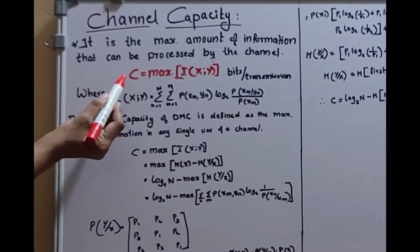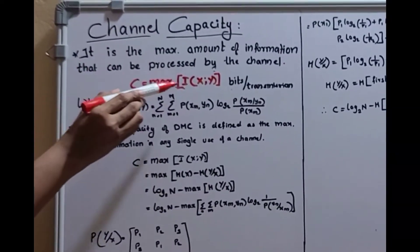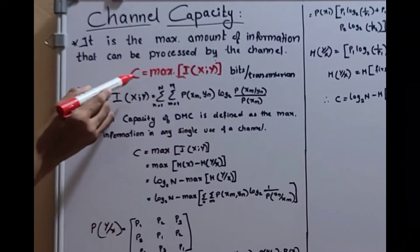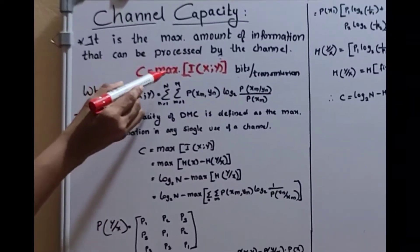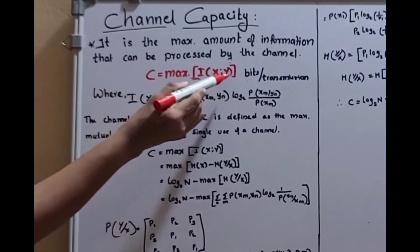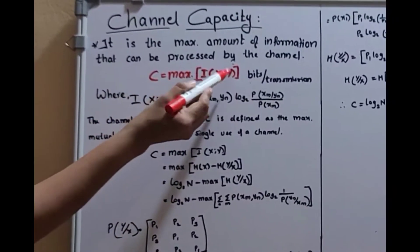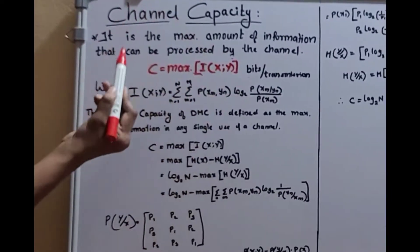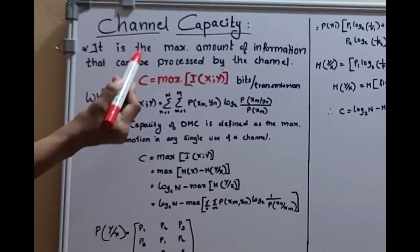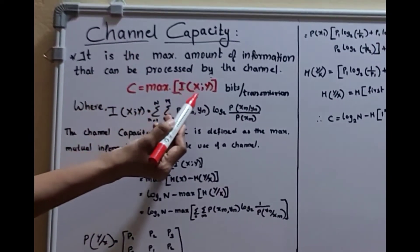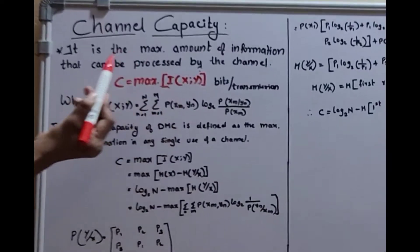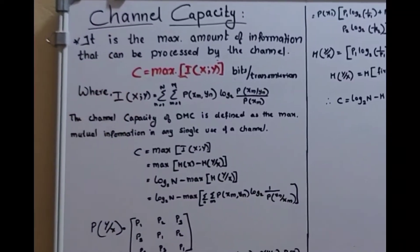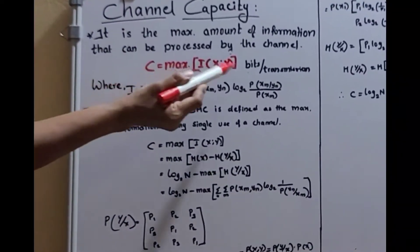The equation is: C is equal to the maximum of mutual information. That is, C equals max of I(x; y), where I(x,y) means mutual information. So the maximum of mutual information is the channel capacity. The unit is bits per transmission.